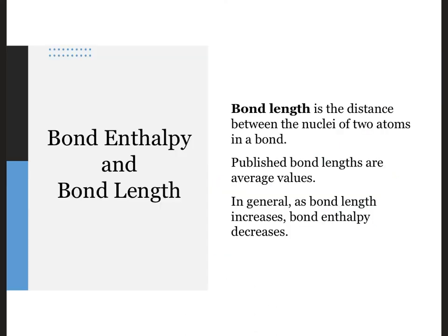Covalent bond length is the distance between the nuclei of two atoms that share electrons in a covalent bond. Published bond lengths are average values obtained from the measurements of many different molecules that contain bonds between the same pairs of atoms. You can compare bond lengths and bond enthalpies between the same two elements to determine a relationship between bond length and bond strength.